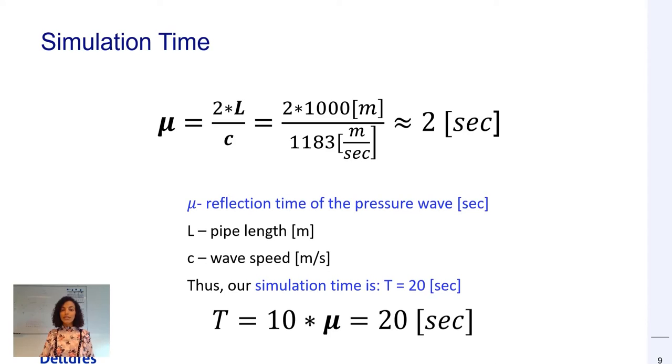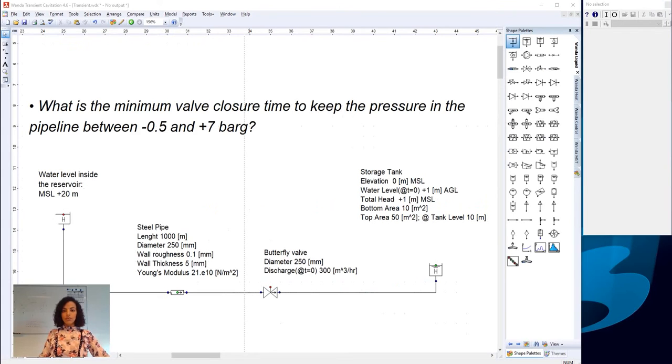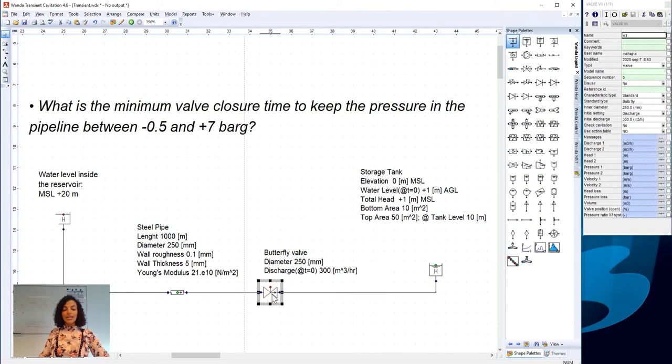Now, let's go to Wanda and implement all of this. In Wanda, we start by selecting the valve because we are interested to simulate the effect of a valve closure. In here, we say yes to use of action table.